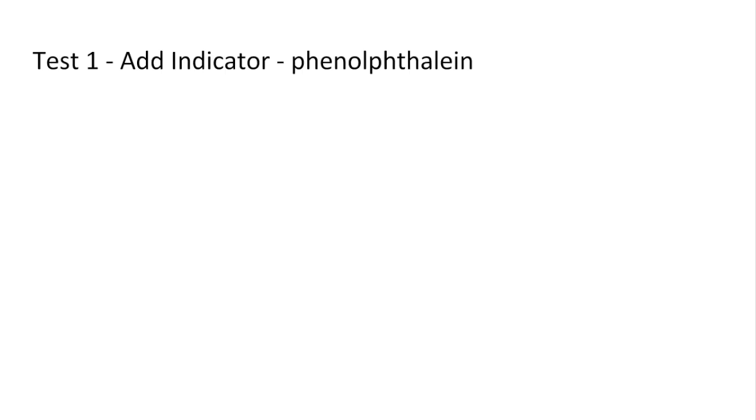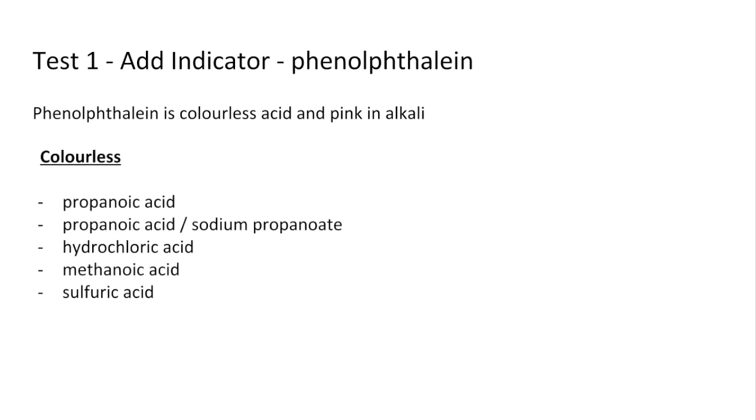The first thing I've decided to do is to add some indicator to the solutions and I'm going to use phenolphthalein. You can use different indicators like litmus, universal, or methyl orange but I've gone for this one. Phenolphthalein is colorless in acid and pink in alkali, so all the acid substances will go colorless and the alkaline substances go pink in phenolphthalein.